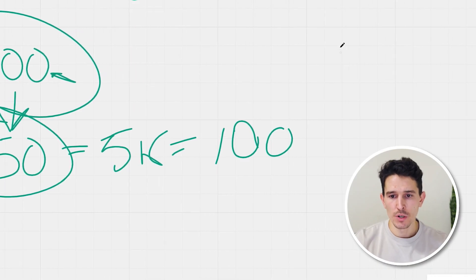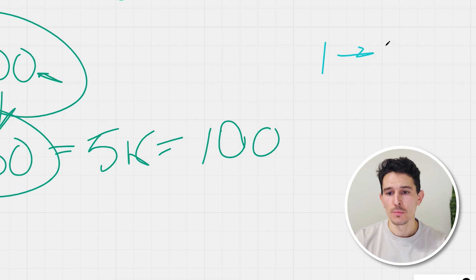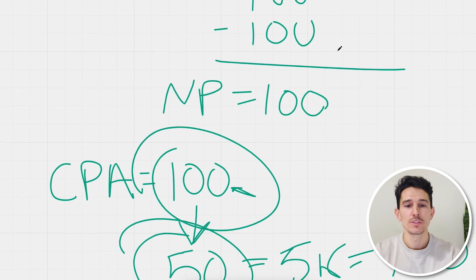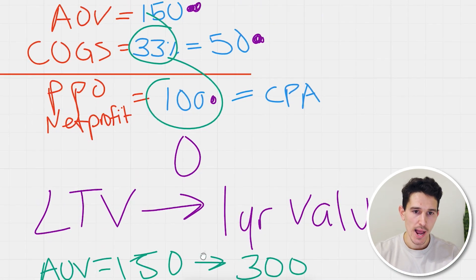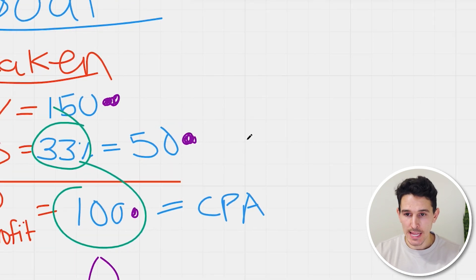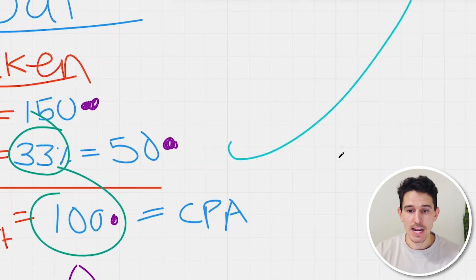Your first customer might cost you a dollar. Your second customer might cost you two. The third might cost you four, six, ten. By the time you get to customer 10,001, it could cost you $99 to acquire them — which is why this comes all the way back to the breakeven strategy. If you're as close to zero as possible, your business is going to grow exponentially instead of flattening out.